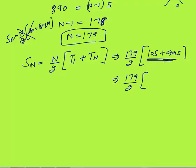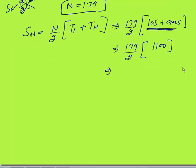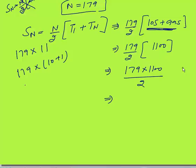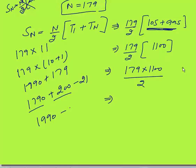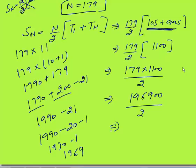Adding 995 + 105: 995 + 5 = 1000, plus 100 = 1100. So sum = 179 × 1100 / 2 = 179 × 550. To multiply 179 × 11: 179 × 10 = 1790, plus 179. To add 1790 + 179: 1790 + 200 − 21 = 1990 − 21 = 1969. So we get 196900 / 2.